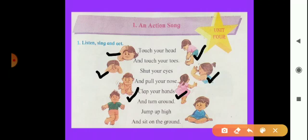And the second last line is 'jump up high.' What is jump? Look here — we can see in this picture this boy is jumping. This is the action of jumping. And 'sit on the ground' — sit on the ground means sit down on whatever floor you have.